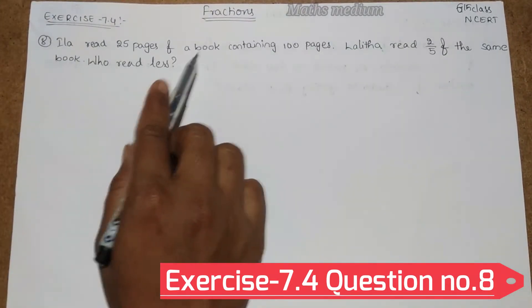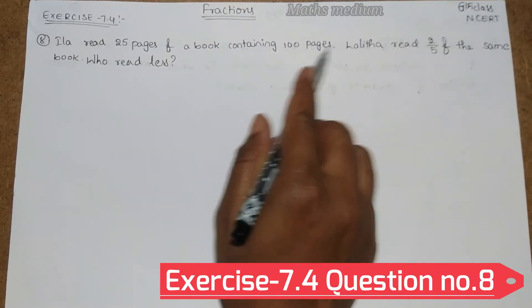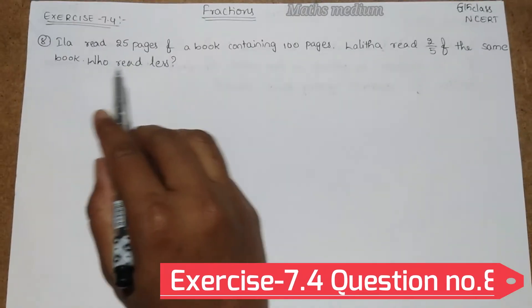Ilar read 25 pages of a book containing 100 pages. Lalitha read 2 by 5 of the same book. Who read less?